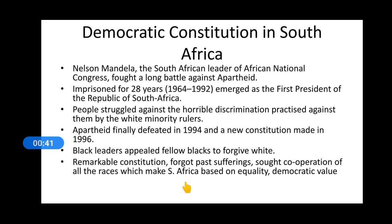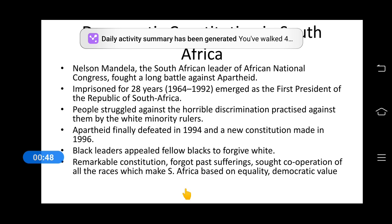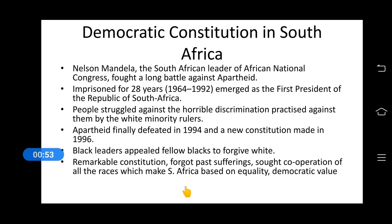In South Africa, the apartheid system was being followed, where discrimination was done on the basis of skin color. The non-white people were not given voting rights, and how the people fought against that gave rise to the new constitution in the South African government.